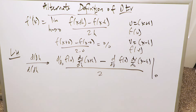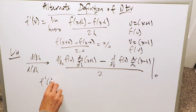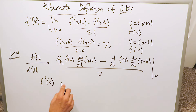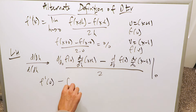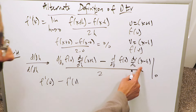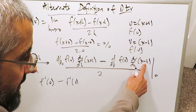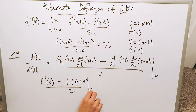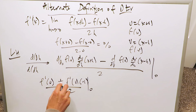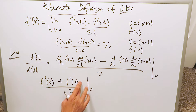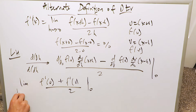At the end you can put in 0. The derivative of f of u is f prime of u, and the derivative of x plus h with respect to h is just 1. The derivative of f of v is f prime of v, and the derivative of x minus h with respect to h is minus 1. So you have f prime u times 1 minus f prime v times minus 1, divided by 2. The minus 1 converts to a positive, so you can eliminate that minus 1.